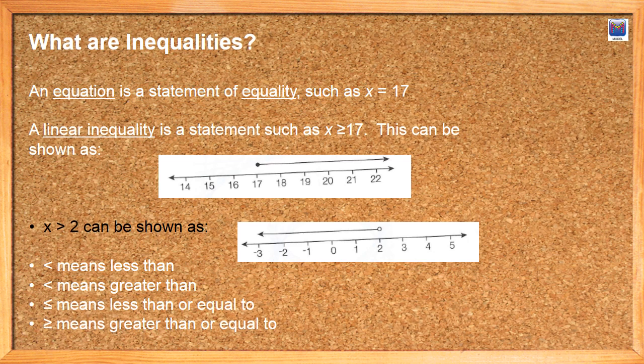So inequalities. An equation is a statement of equality and it has this equal sign in here. Because it's got that equal sign, you know that x equals 17. That's exactly what x is. A linear inequality, though, is a little bit different. A linear inequality is a statement such as this one here.